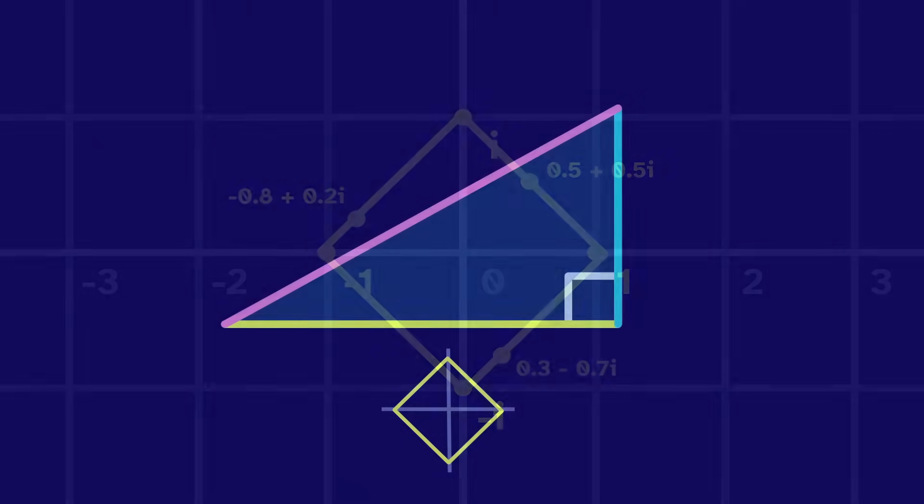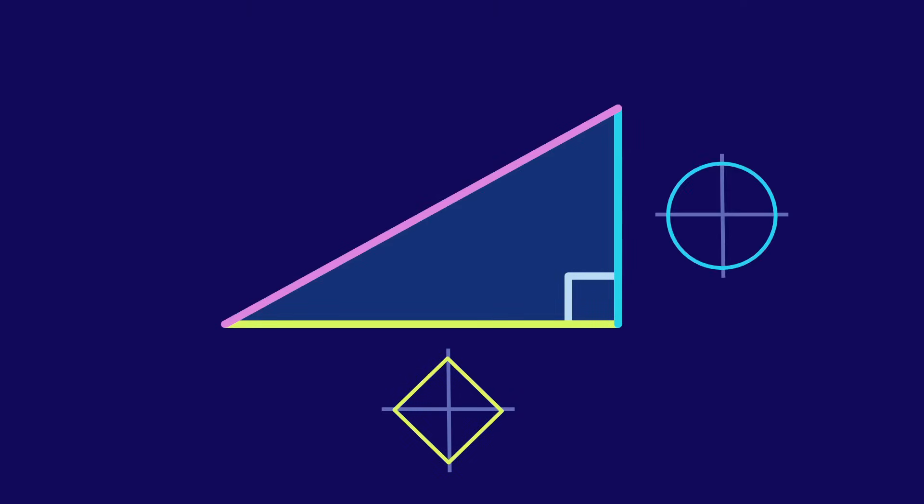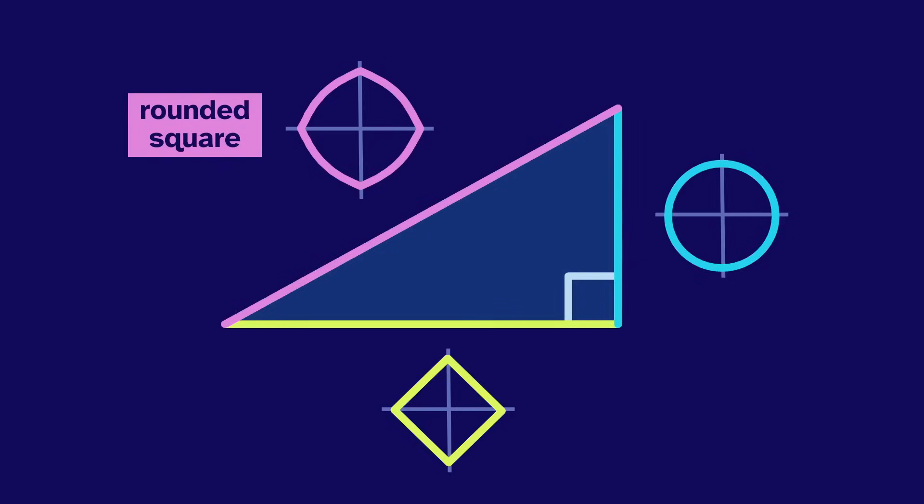And if we take the other side length to be the set that forms a circle, then we can put pairs of points through the Pythag procedure, and this process produces a rounded square.